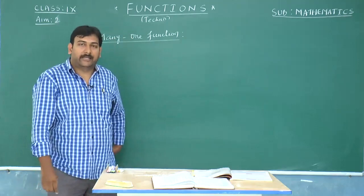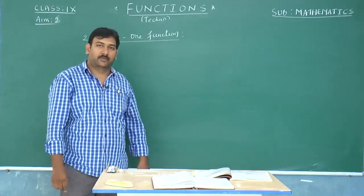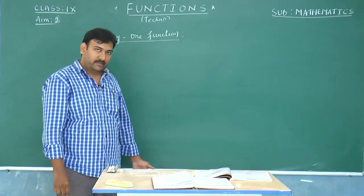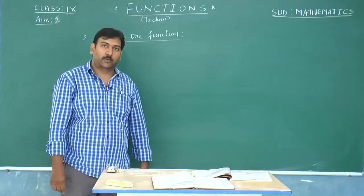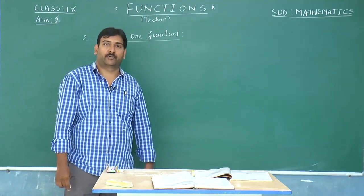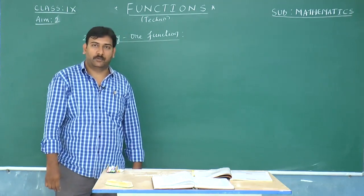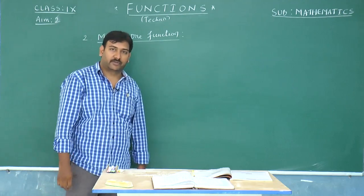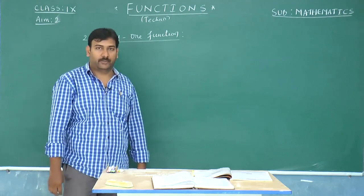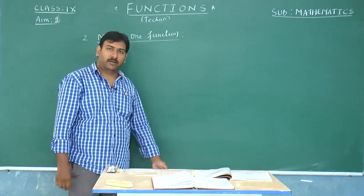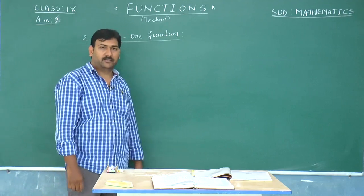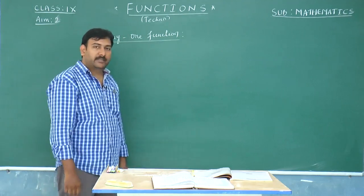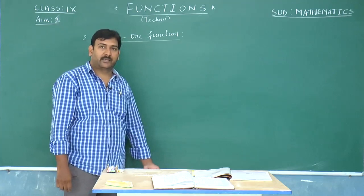We are going to continue with the second type of function, called the many-to-one function. In the previous class we saw the one-to-one function and various problems based upon it. A function which is not a one-to-one function is called a many-to-one function — that is, distinct elements may have the same image.